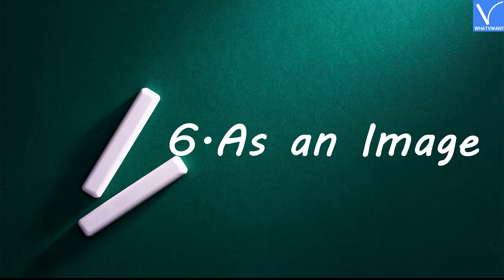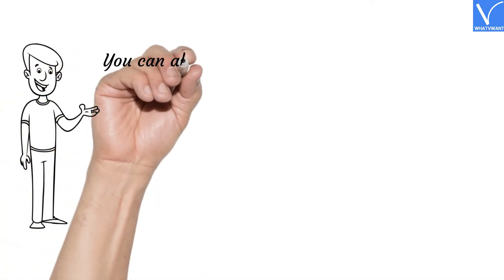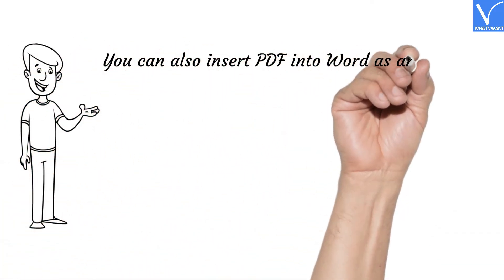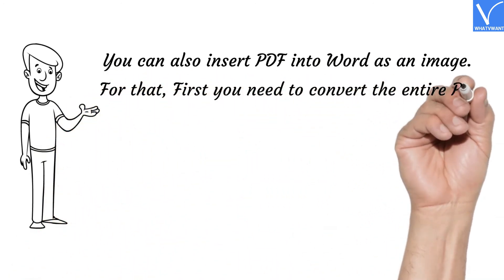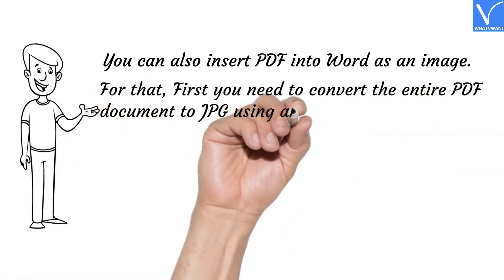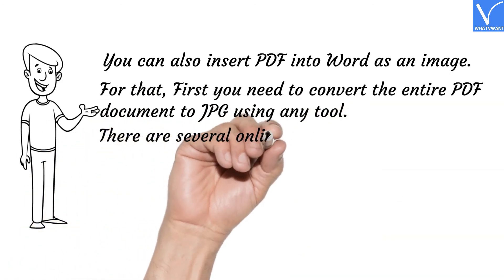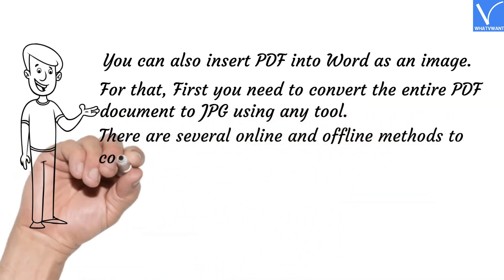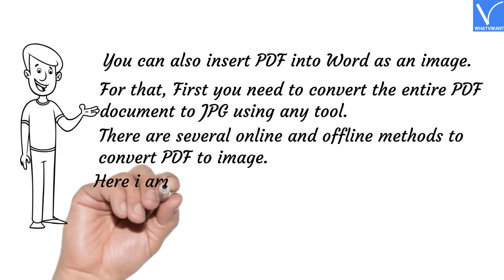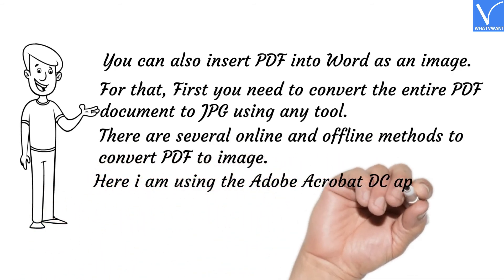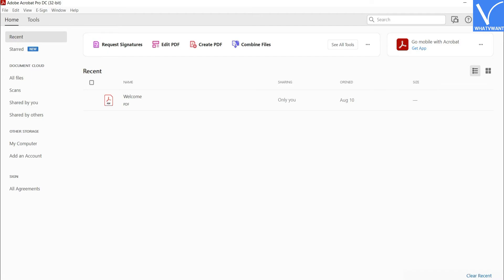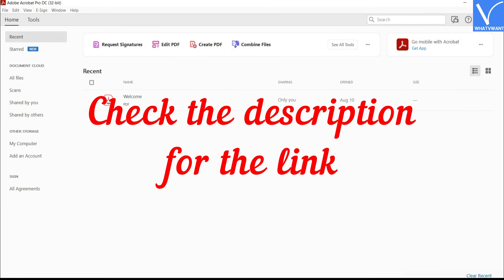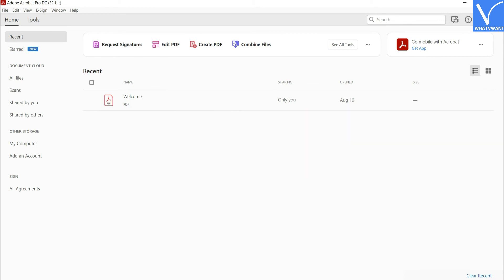Number 6: As an Image. You can also insert a PDF into Word as an image. For that, first you need to convert the entire PDF document to JPG using any tool. There are several online and offline methods to convert PDF to image. Here I am using the Adobe Acrobat DC application to convert PDF to image. Download and install Adobe Acrobat DC from its official site. Check the description for the link. Launch the application.